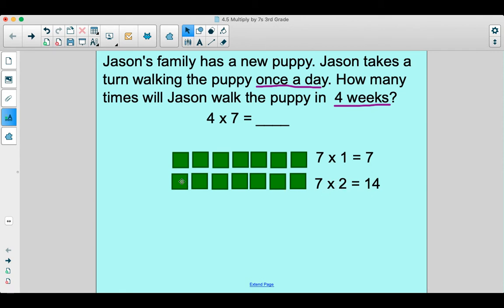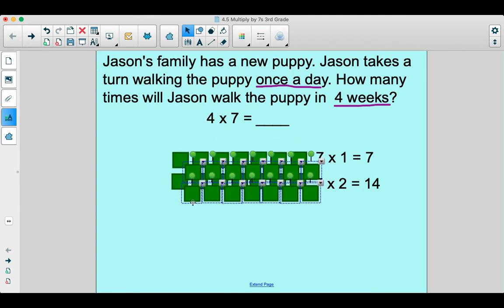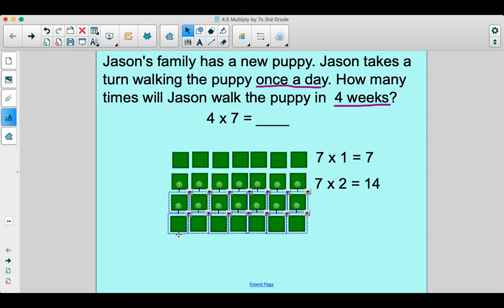And then we could add another row to make three weeks, but we're trying to figure out what four weeks is. So I think I'm just going to go ahead and double this one. So we're doubling that 14, right? So since we doubled the 14, we could just think about it as 7 × 2 is 14. And then another 7 × 2 is 14. Add those together. And what do you get?